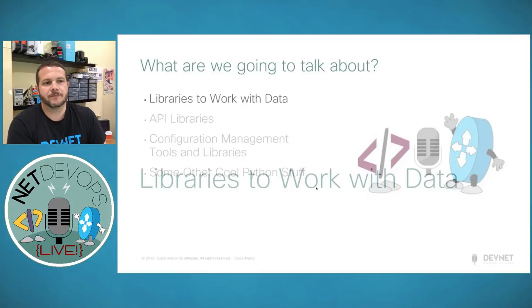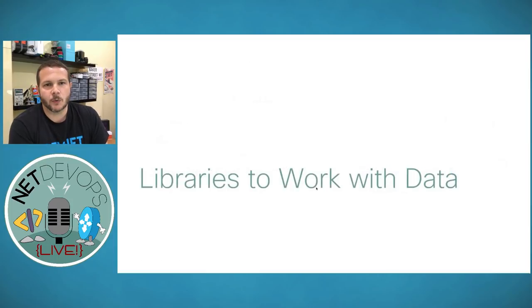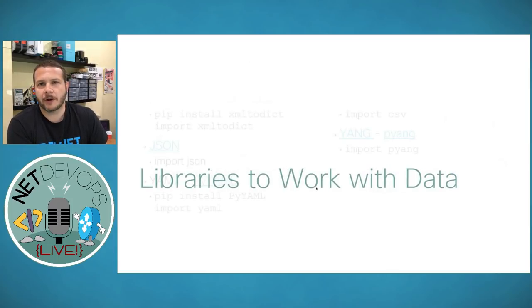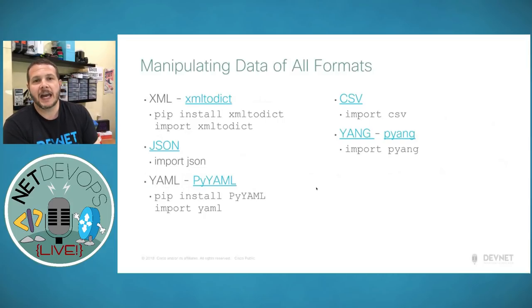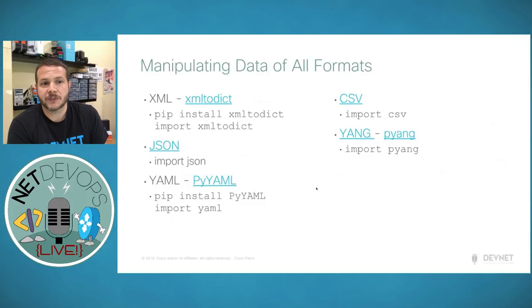Libraries to work with data. As you do your network automation, you're going to come across lots of different data formats: XML, JSON, YAML, CSV, and Yang are the ones we're going to go through.